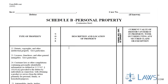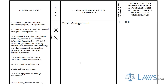The Form B-6B Schedule B Personal Property Filing Process. The Form B-6B Schedule B for Personal Property consists of three pages. Each page contains three columns of questions that pertain to your personal property.